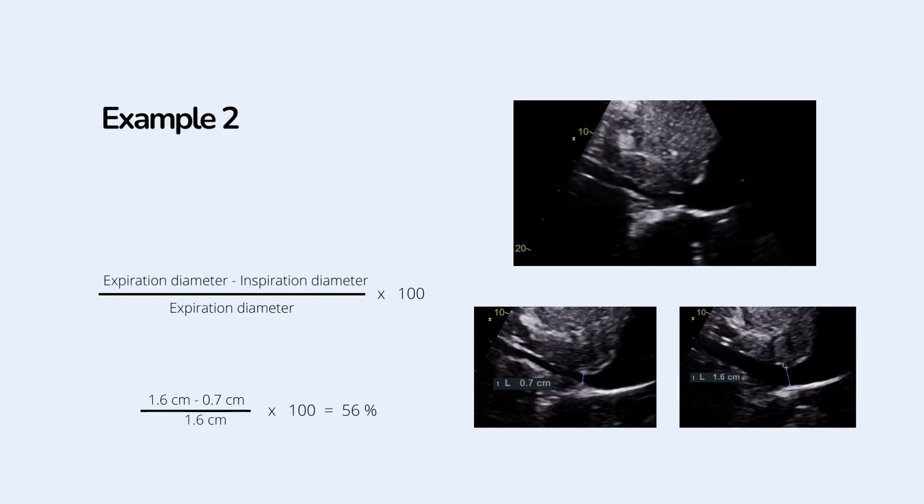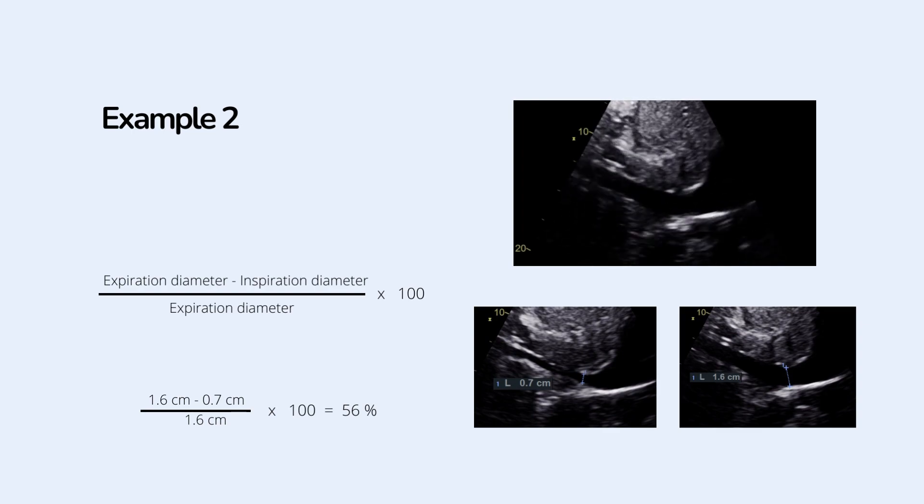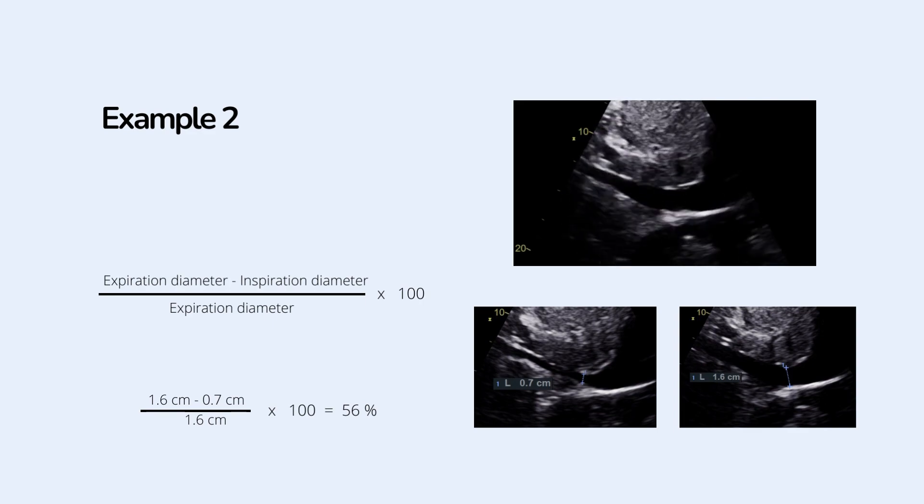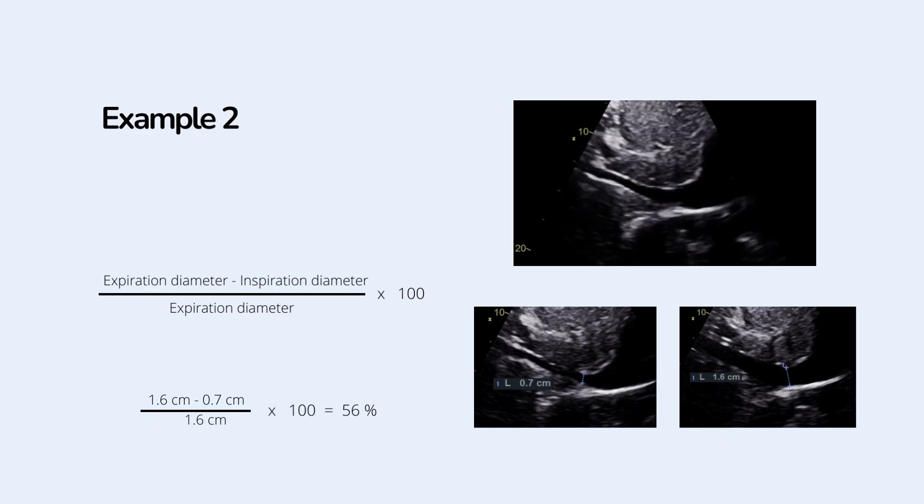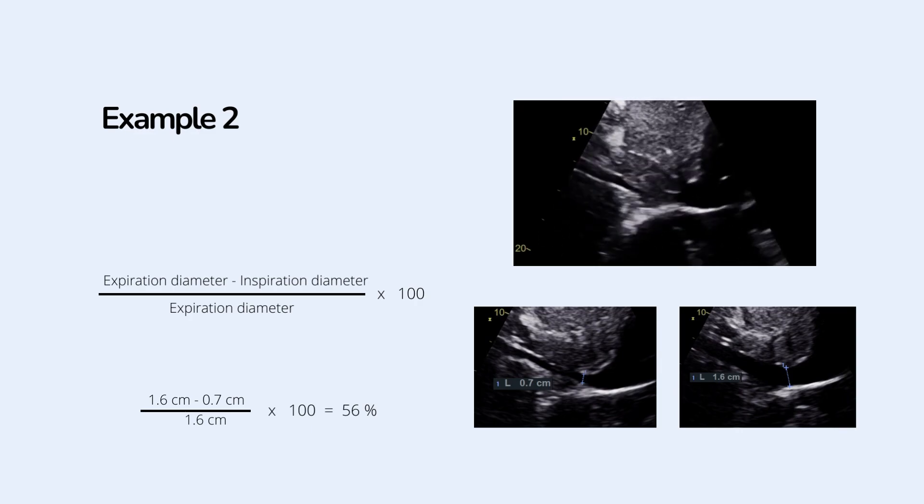Another example. Diameter on expiration is 1.6, minus the diameter on inspiration 0.7, divided by diameter on expiration 1.6, multiply by 100 equals 56%. On our table.